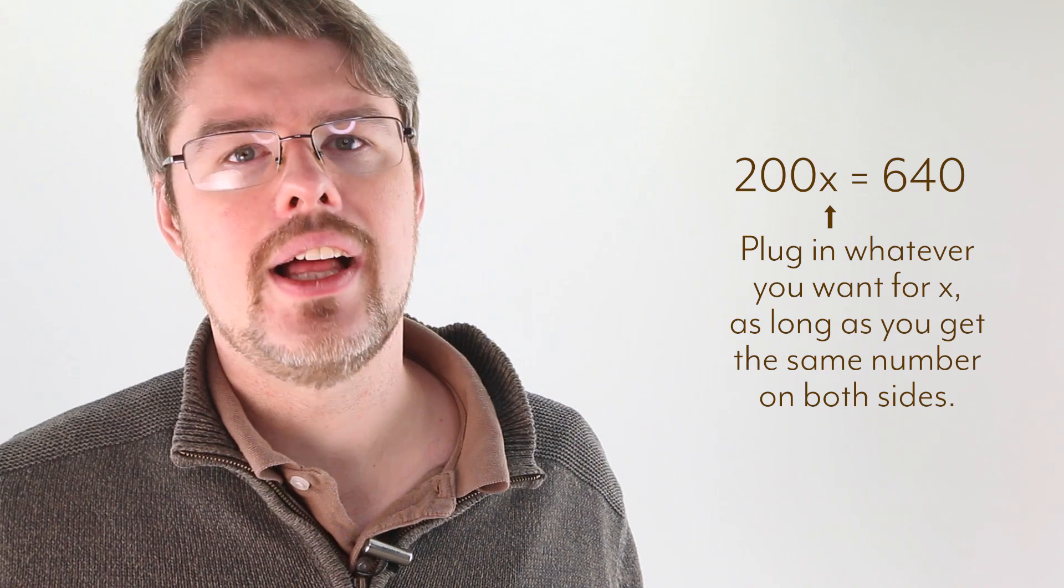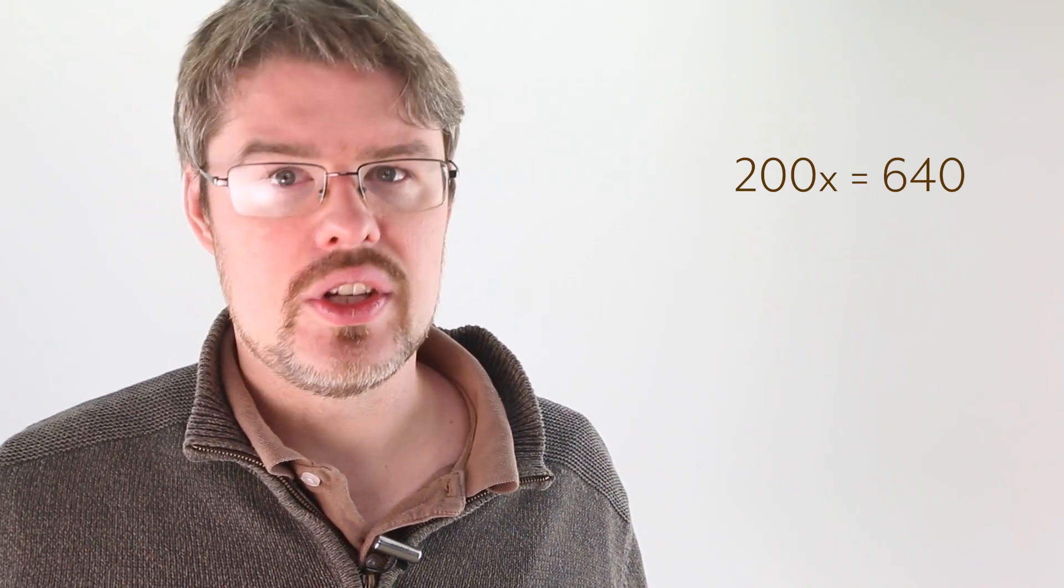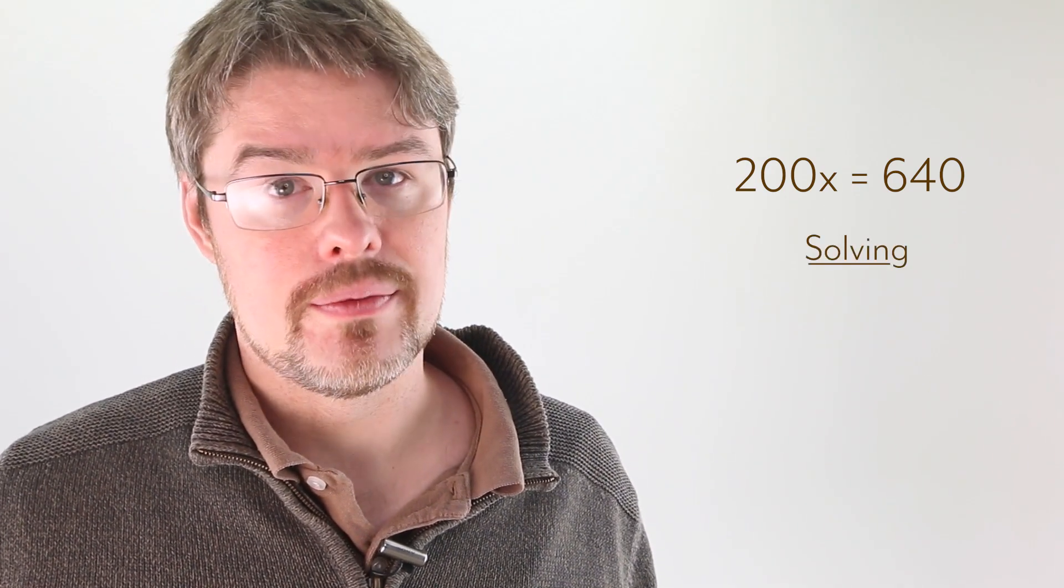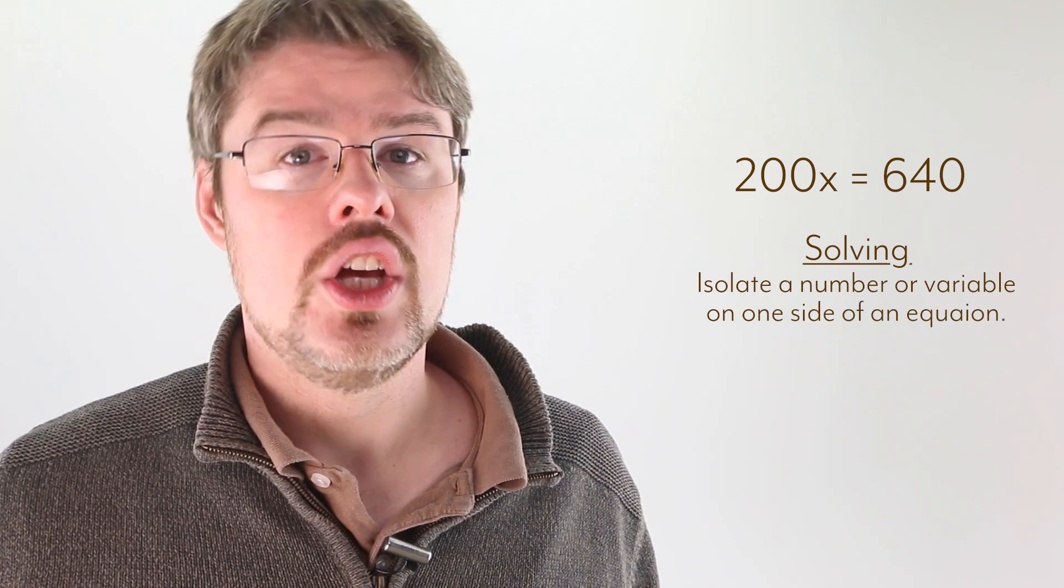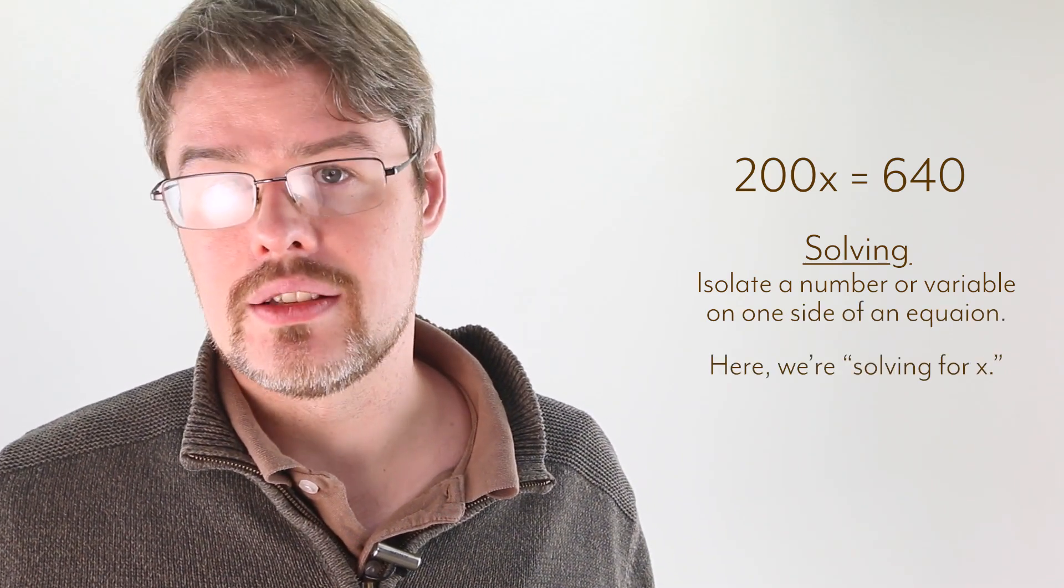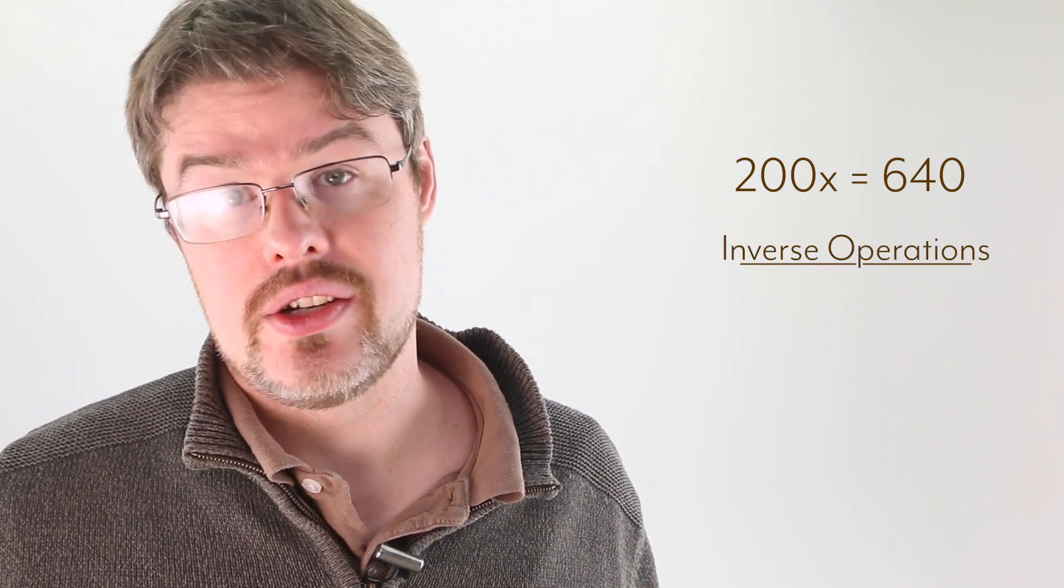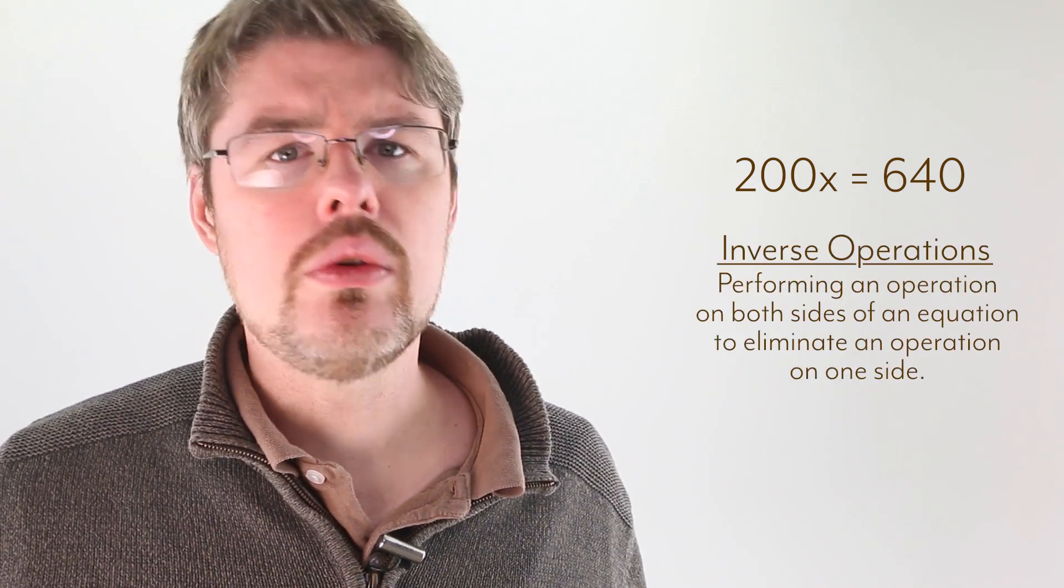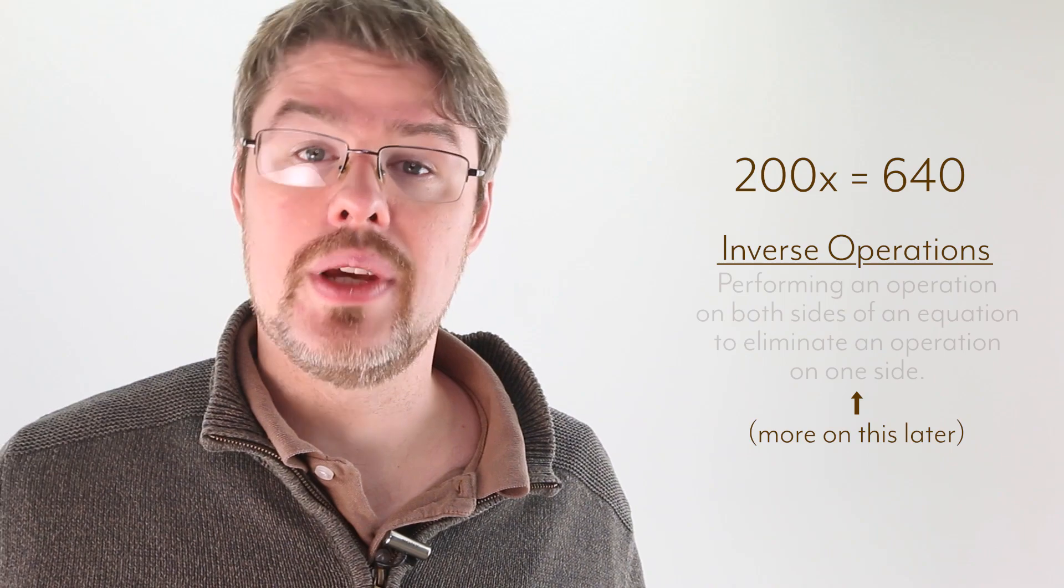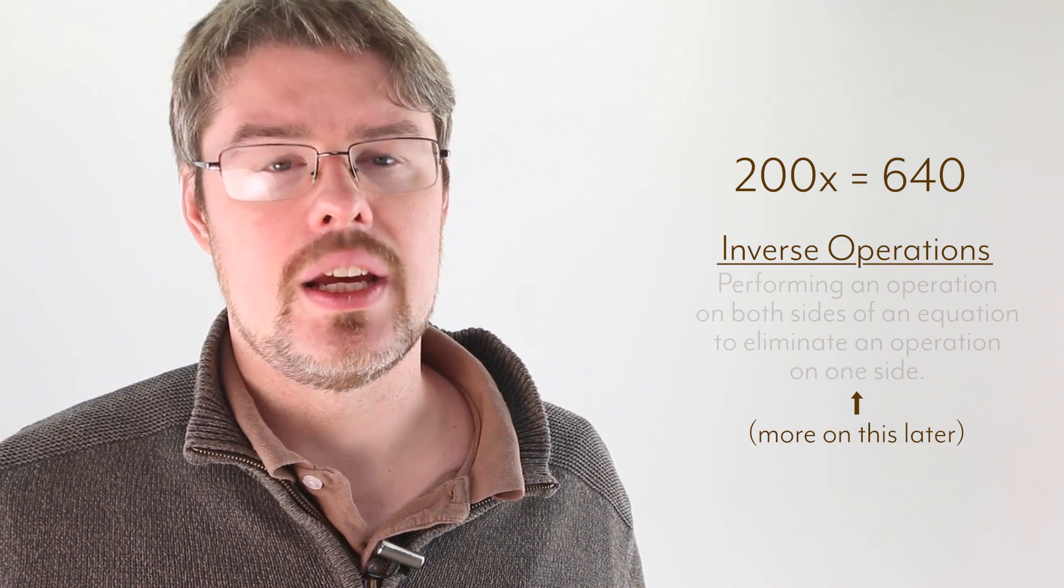Here, there's only one value for x that'll work. The method you would use to discover it is called solving, in this case for the variable x. Spoken, we call it solving for x. The steps you would take to go down this path are called inverse operations. We'll solve for x now, but I won't go into too much detail because this is a big topic. We'll see it many times in the coming videos.